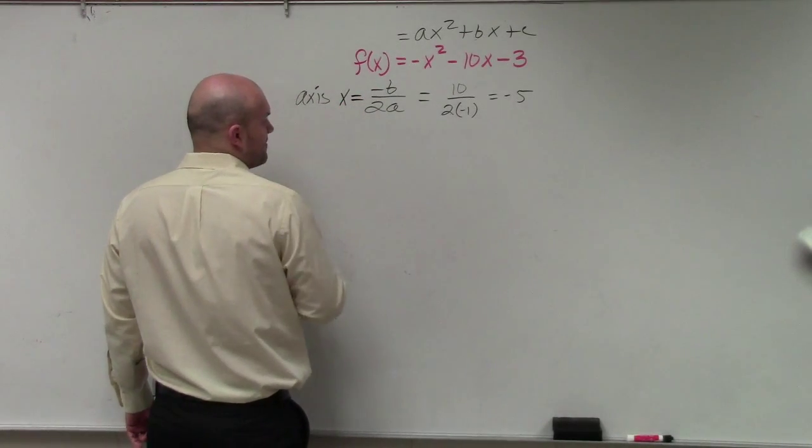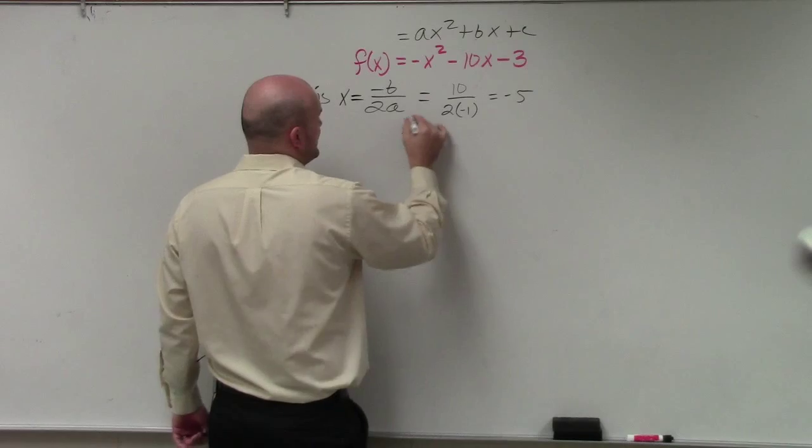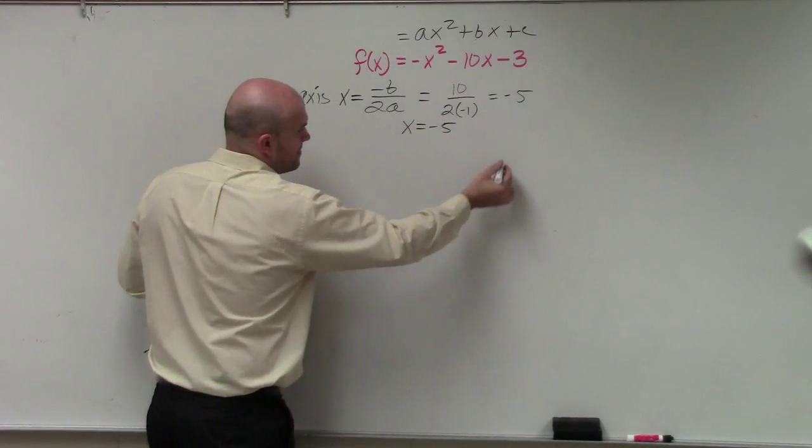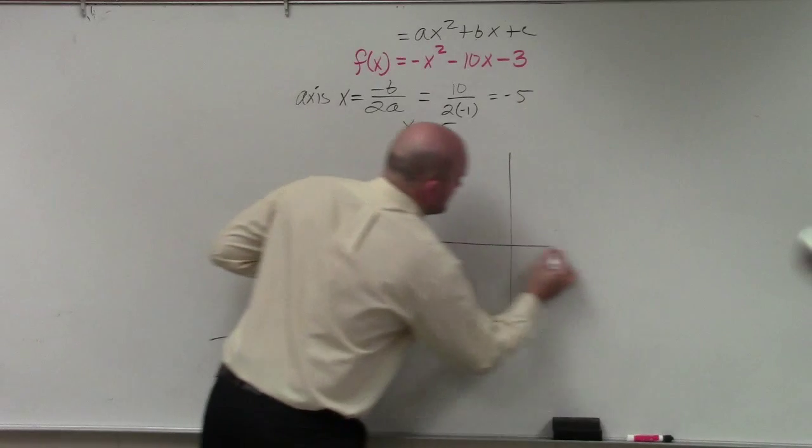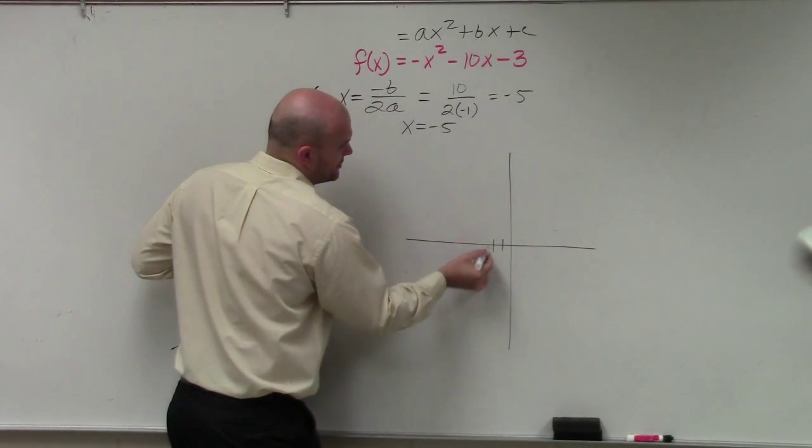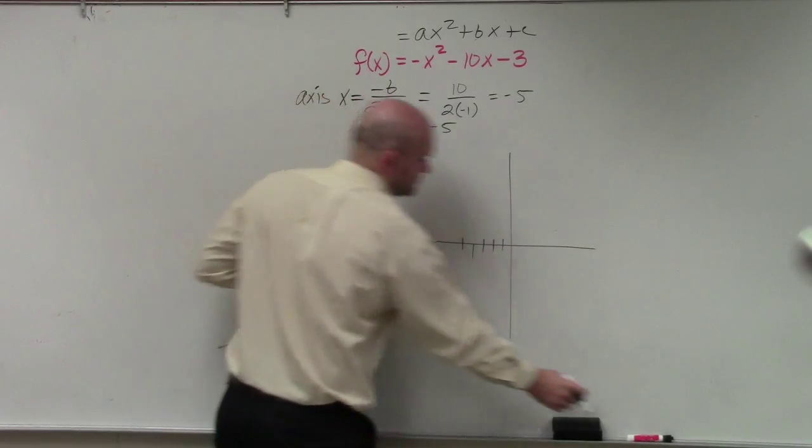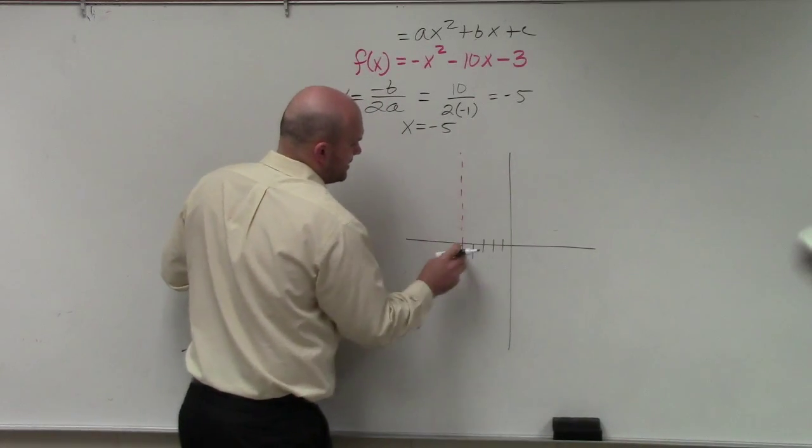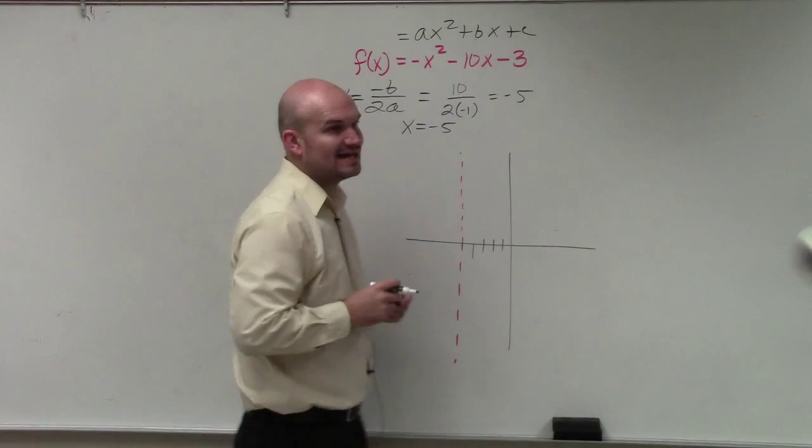It's x equals. So therefore, my axis of symmetry is x equals negative 5. So if I was going to go ahead and graph this, 1, 2, 3, 4, 5, I'd go ahead and draw a nice little vertical line at x equals negative 5.